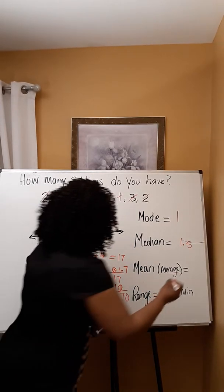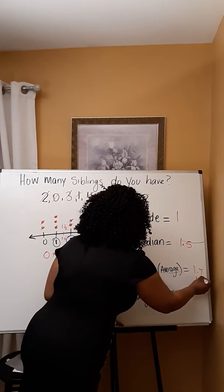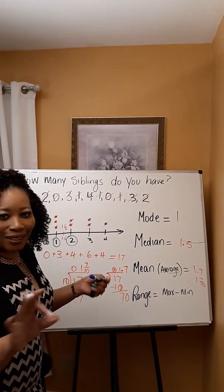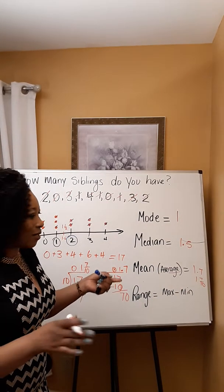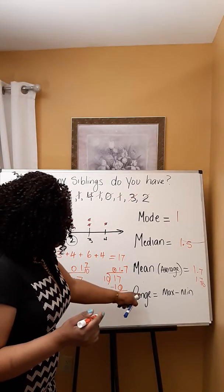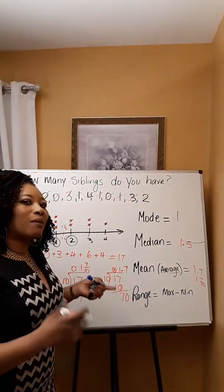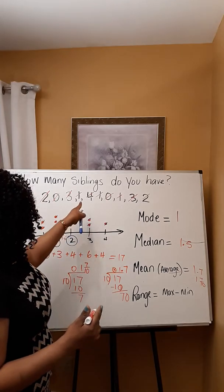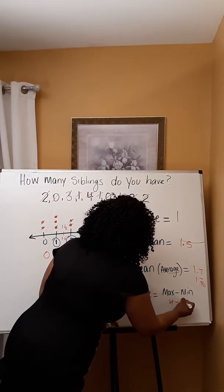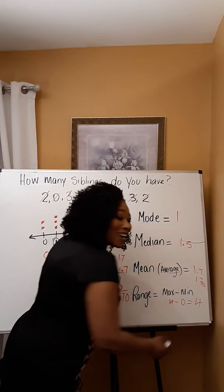The range is the easiest one — it starts with R and most students remember this one. The range represents the difference between the maximum and the minimum. In this set of data, 4 take away 0 gives a range of 4.